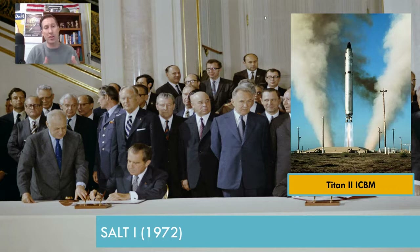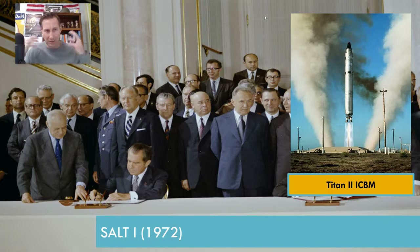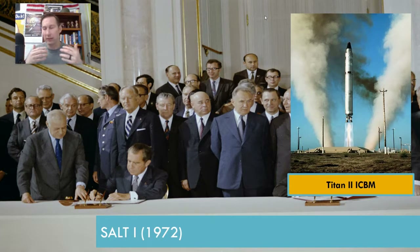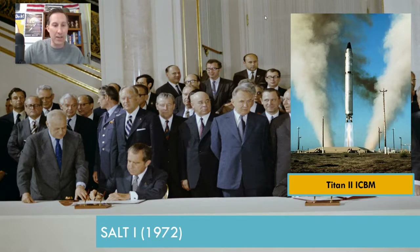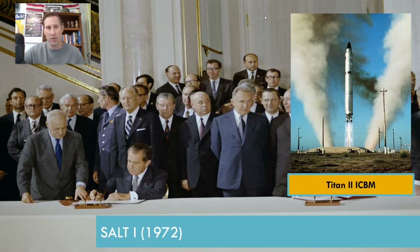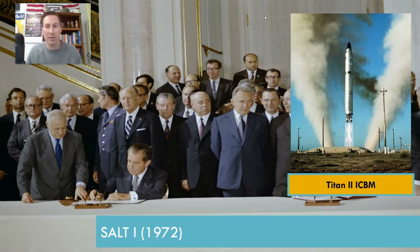At the same time, Nixon was trying to reduce arms between the US and the Soviet Union. The ghosts of the Cuban Missile Crisis were still in the minds of many Americans and politicians, and there was fear that we were on a path towards mutual assured destruction, or MAD. So SALT-1 was negotiated and signed in 1972, which reduced the number of ballistic missiles in the arsenals of both countries — missiles like the intercontinental ballistic missile, the Titan II, capable of carrying a nuclear warhead.